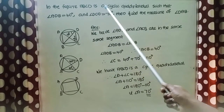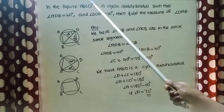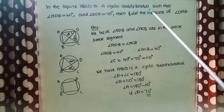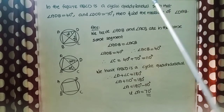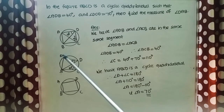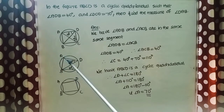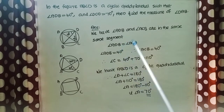In the figure, ABCD is a cyclic quadrilateral such that angle ADB equals 40 degrees and angle DCA equals 70 degrees. Find the measure of angle DAB. Angles ADB and ACB both lie on the same segment AB, so they are equal. Since angle ADB equals 40 degrees, angle ACB also equals 40 degrees.